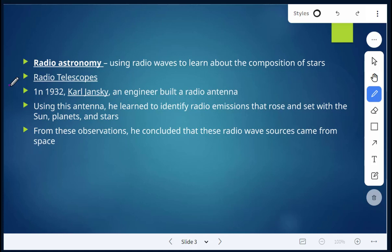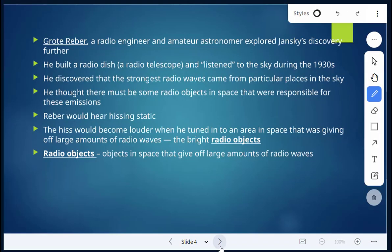And using this antenna, he learned to identify radio emissions that rose and set with the Sun, planets, and the stars. And so from these observations, he concluded that these radio wave sources were coming from space.